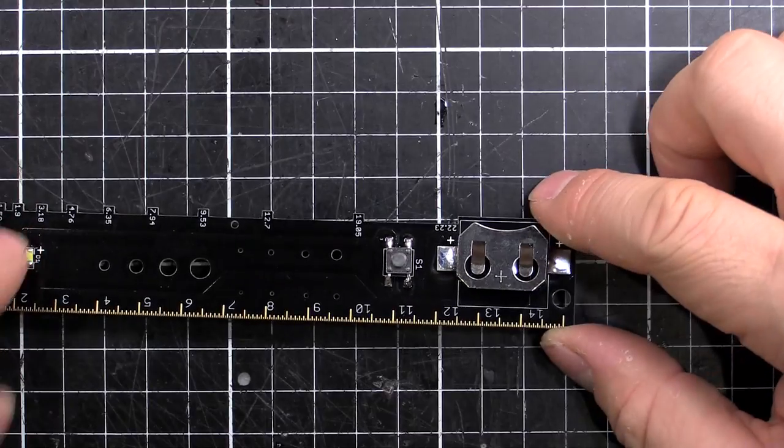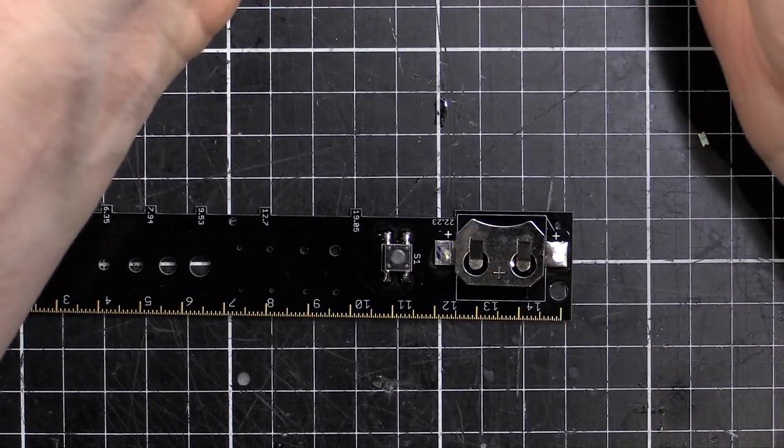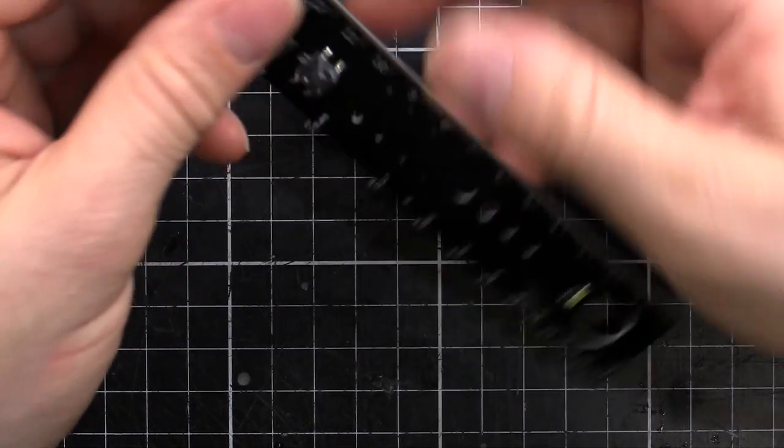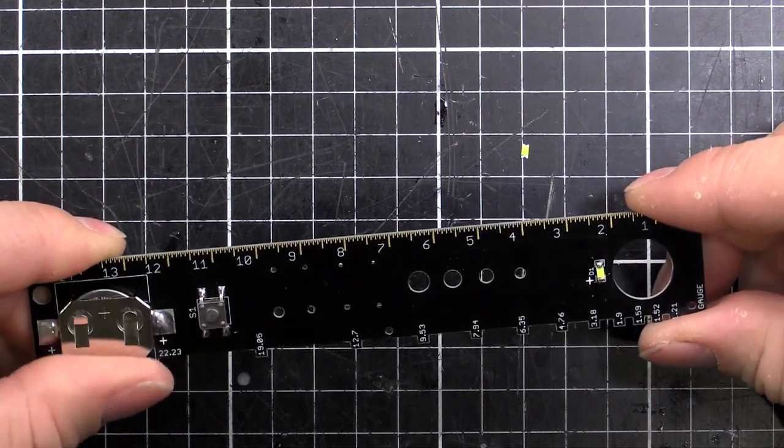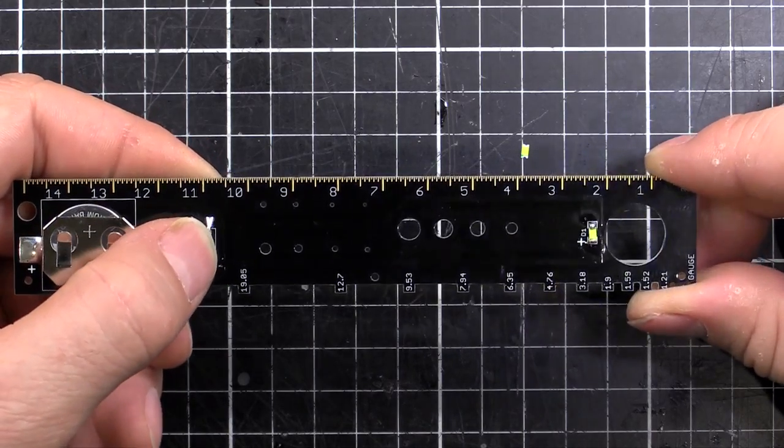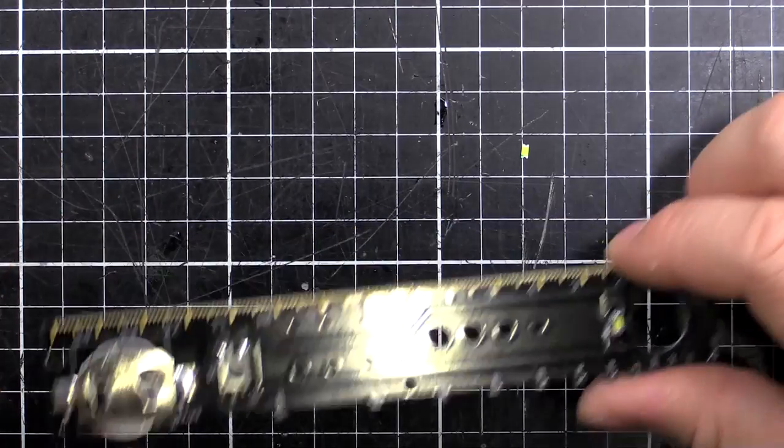That's pretty much the whole thing done, ready to test. So we'll get a battery and stick it into the device, that way. There we go. Beautiful. Works perfectly. That works great. So now we've got to put the lens and the magnet in.